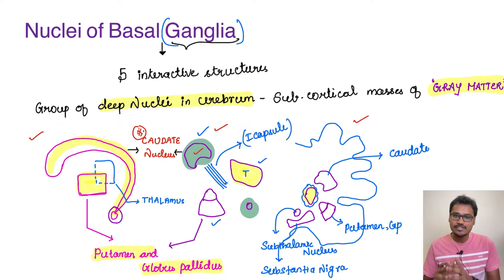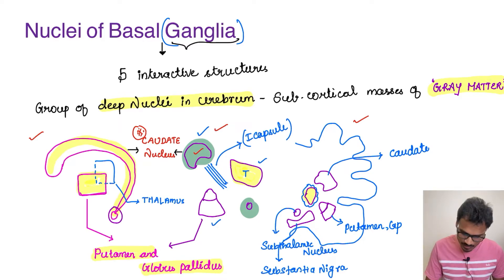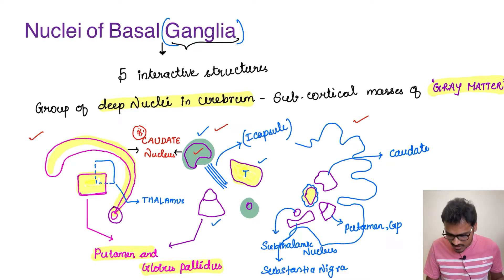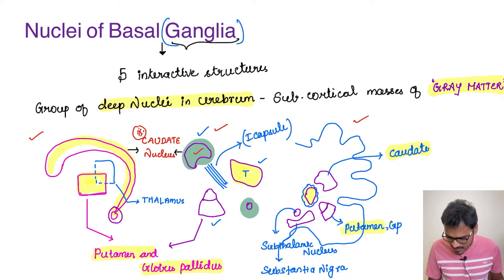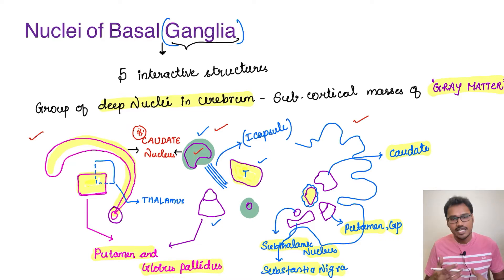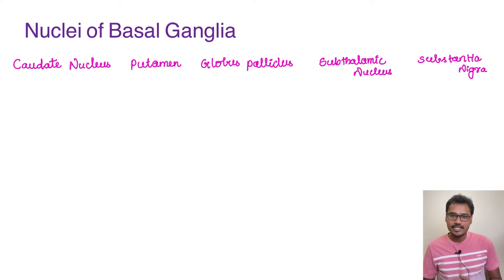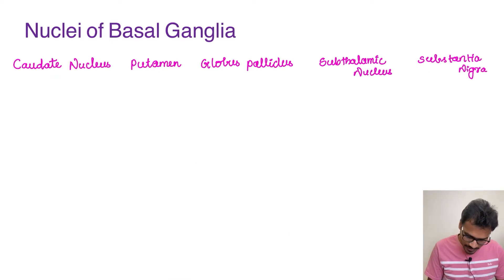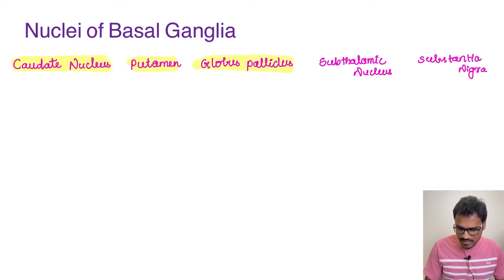We must remember all five interactive structures as they are all very important. First is the caudate nucleus; second and third are the putamen and globus pallidus; fourth is the subthalamic nucleus; and fifth is the substantia nigra. Coming to the nuclei of basal ganglia in detail: we have five nuclei — caudate, putamen, globus pallidus, subthalamic nucleus, and finally substantia nigra.